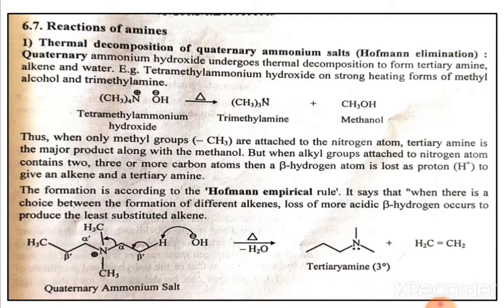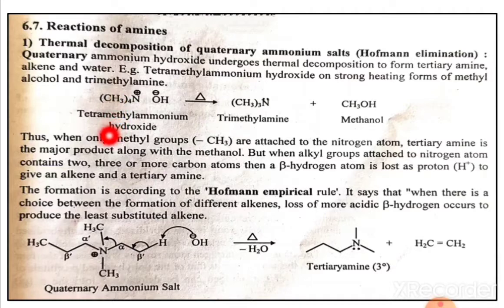The most interesting case is that when only methyl groups, that is CH3 groups, are attached to the nitrogen atom, the tertiary amine is the major product along with methanol. But when the alkyl groups attached to the nitrogen atom contain two, three, or more carbon atoms, the beta hydrogen atom is lost as a proton H+ to give alkene and tertiary amine.